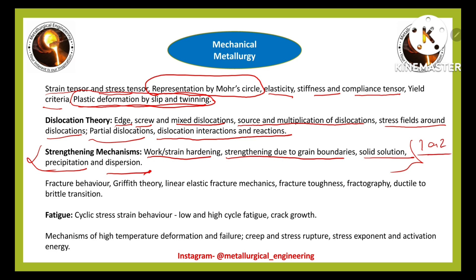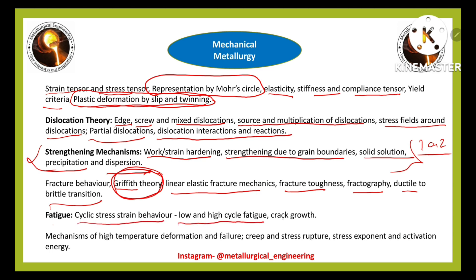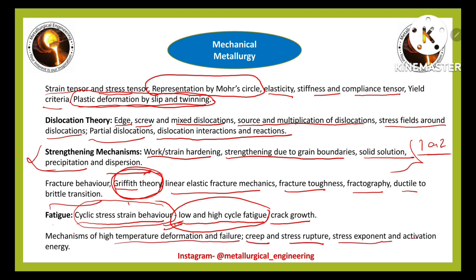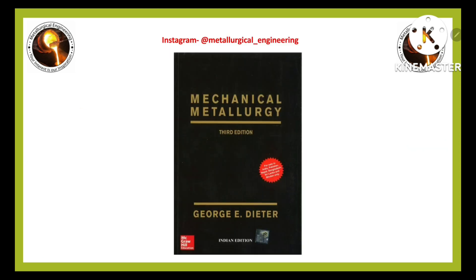Fracture behavior includes Griffith theory — from which you will definitely get one numerical — linear elastic fracture mechanics, fractography, and ductile-to-brittle transition. Fatigue covers cyclic stress-strain behavior, low and high cycle fatigue, and crack growth via Paris law — expect at least one problem here. High-temperature deformation and failure covers creep, stress exponent, and activation energy. The one important book recommended for mechanical metallurgy is 'Mechanical Metallurgy' by Dieter.